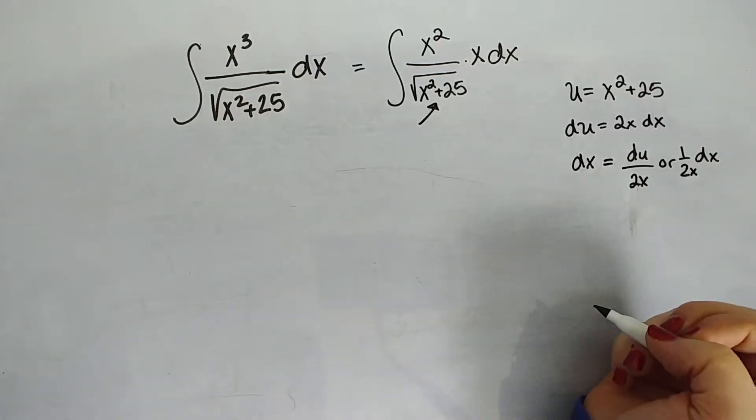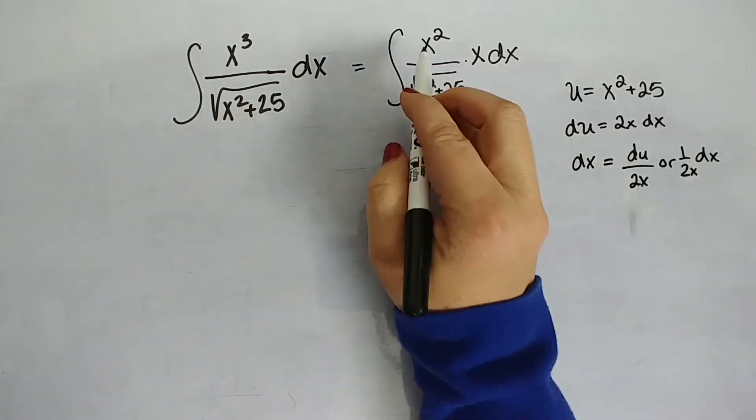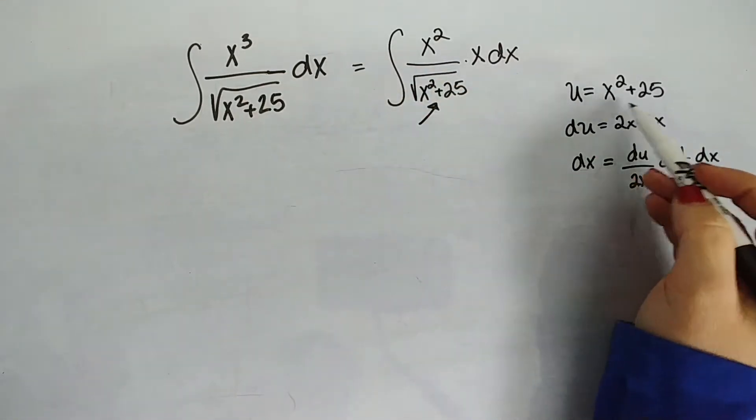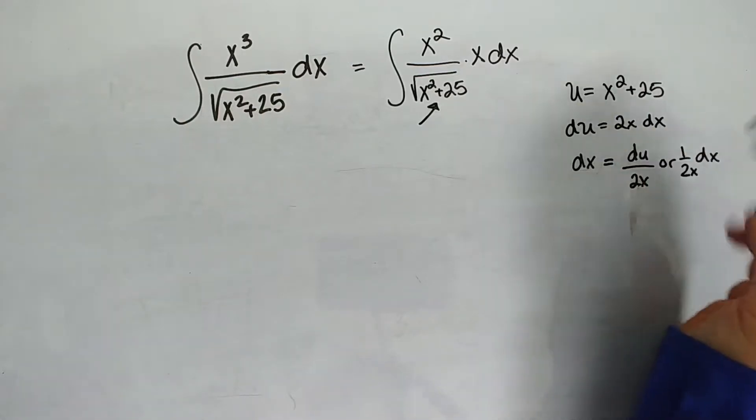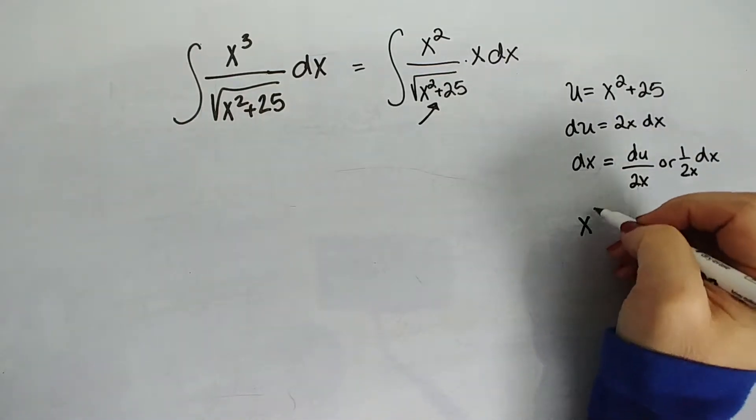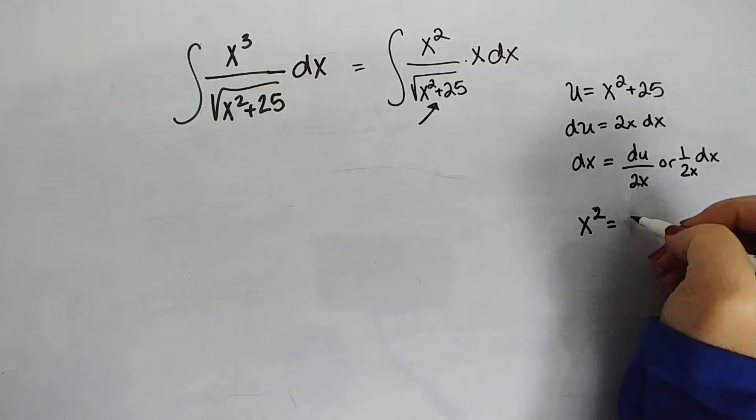Okay, so is there anything else I need? Well, I do. I have an x squared up here. So, and I have an x squared here with u. So if I subtract 25 from both sides, I'm going to see that x squared is equal to u minus 25.